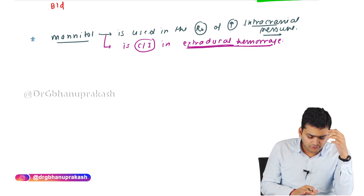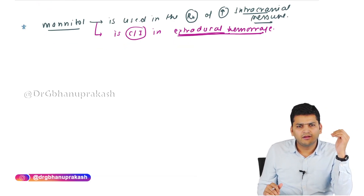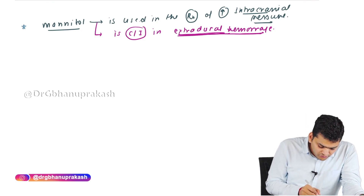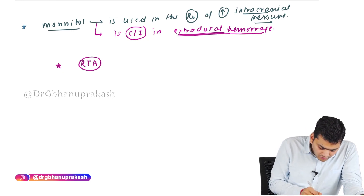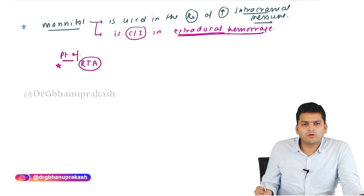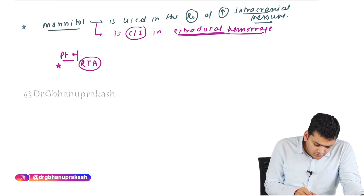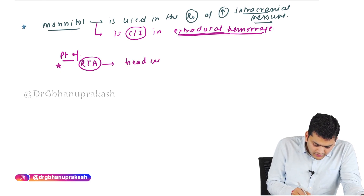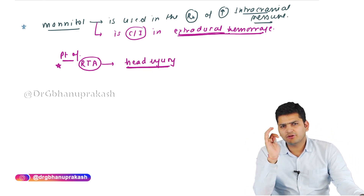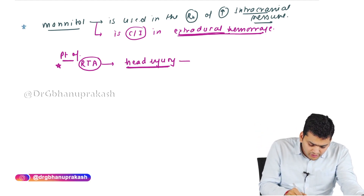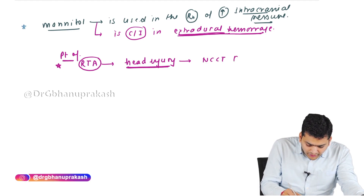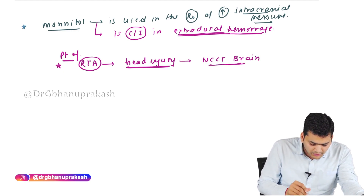To determine whether a patient has extradural or subdural hemorrhage, when a patient comes to the emergency room with a road traffic accident and head injury, the first investigation to order is an NCCT (non-contrast CT) scan of the brain.